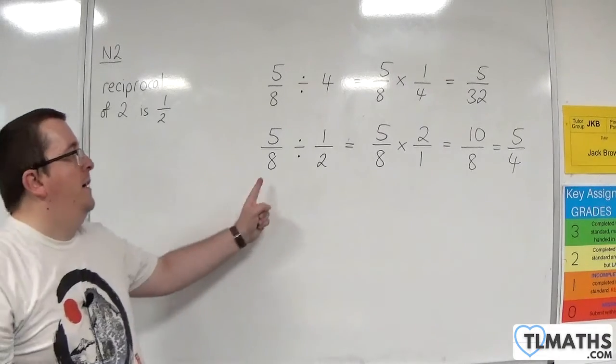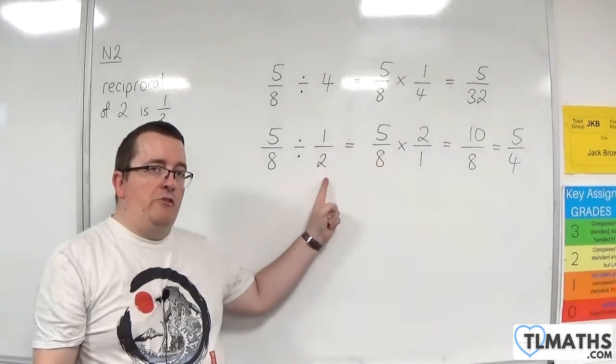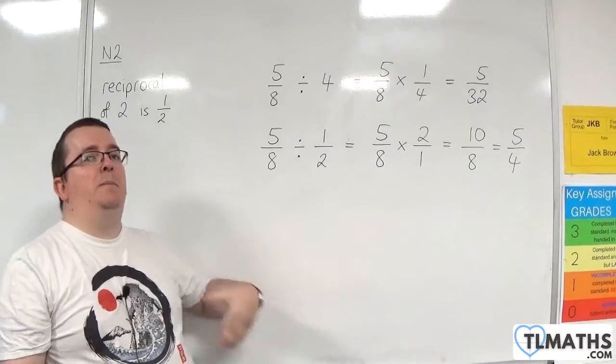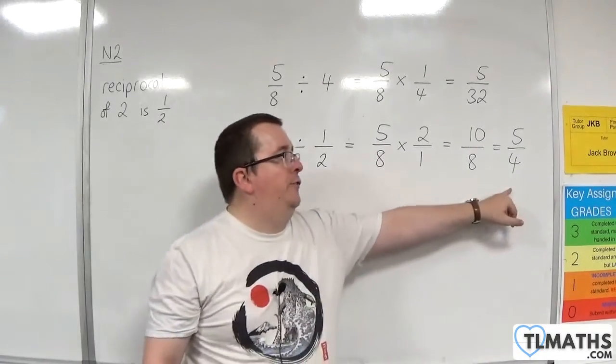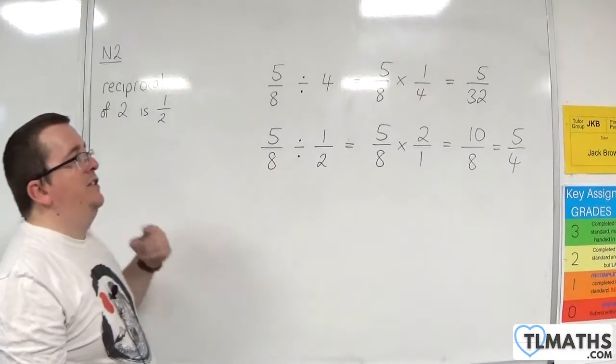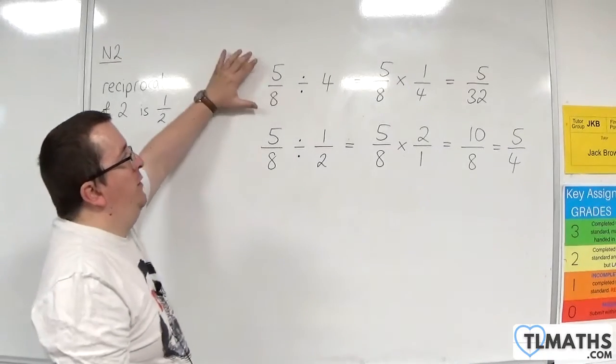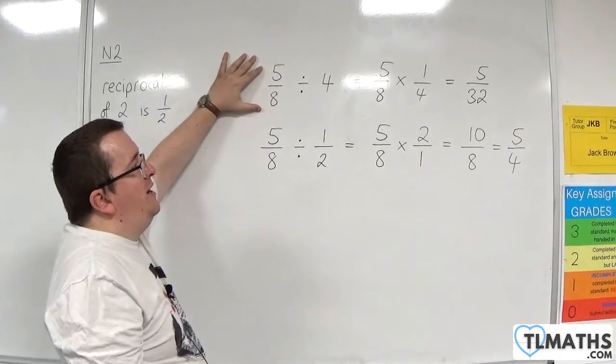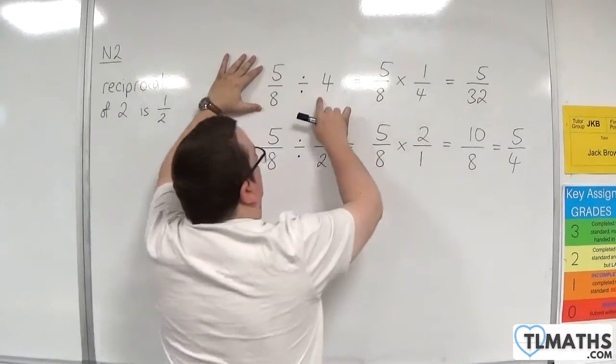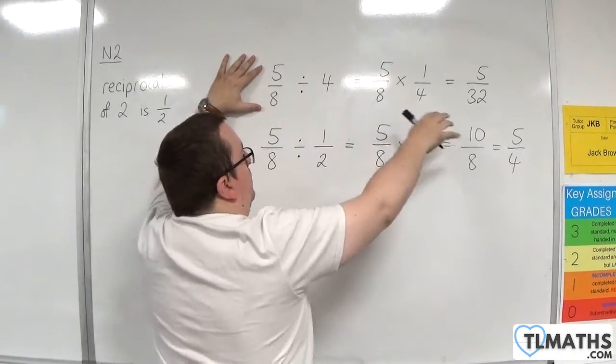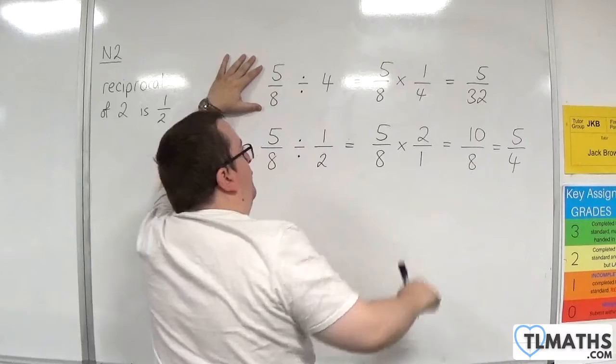So when I divide by a number between 0 and 1, I get something larger—in this case, 5 quarters. Usually, you think when I do division, I should always end up with something smaller. And I do in this case because I'm dividing by 4; I'm splitting it up into 4 equal pieces, each of size 5 over 32.